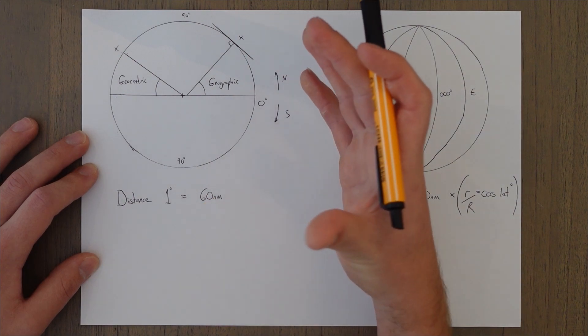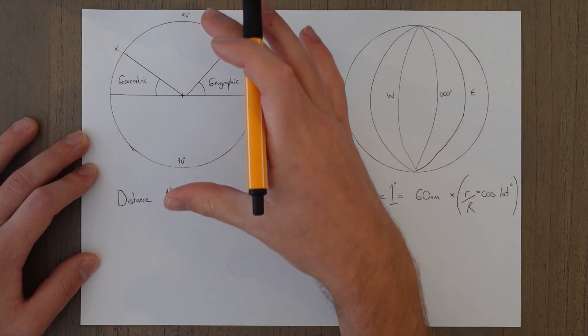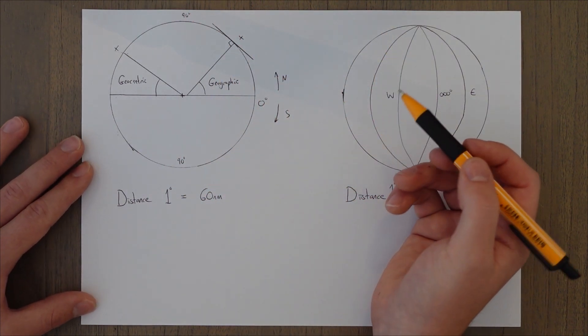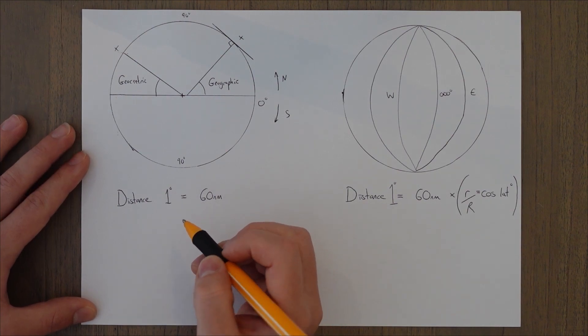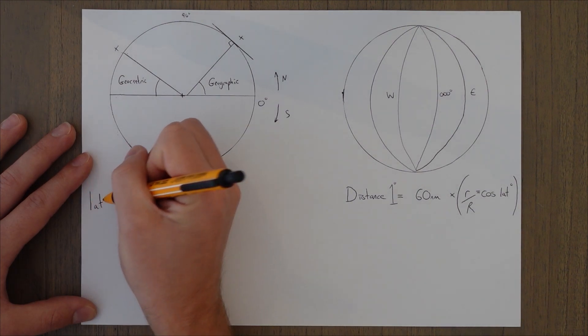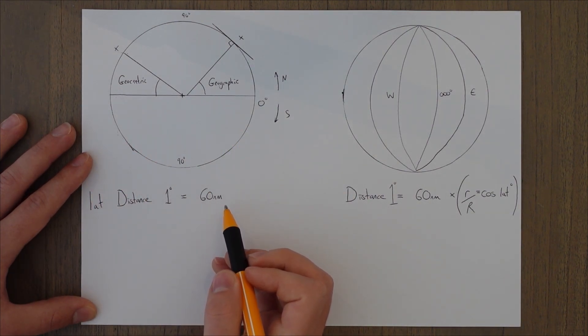The squish nature of the earth means that a one degree change in latitude is slightly different at the poles than it is at the equator. But because it's so small in aviation, we ought to ignore that difference. We essentially assume that the earth is a perfect sphere for distance. And that means that our calculation of latitude distance of one degree is equal to 60 nautical miles.